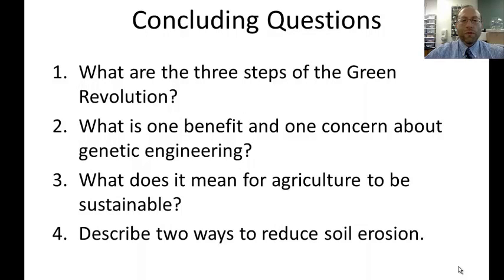Now for the concluding questions. Question one: what are the three steps of the Green Revolution? Question two: what is one benefit and one concern about genetic engineering? Question three: what does it mean for agriculture to be sustainable? Question four: describe two ways to reduce soil erosion. That concludes this vodcast and I'll see you in class tomorrow.